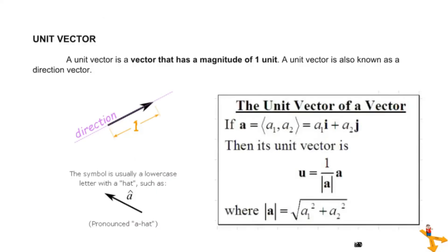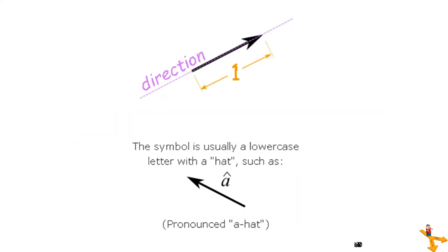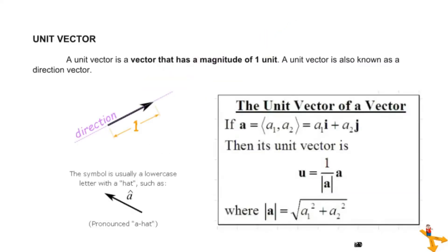Unit vector. A unit vector is a vector that has a magnitude of one unit. A unit vector is also known as a direction vector. The symbol for the unit vector is usually a lowercase letter with a hat, such as shown in the picture. The unit vector of a vector can be calculated using the given formula. Unit vector equals the ratio of one and the magnitude of the given vector. Where the magnitude of the vector can be calculated by getting the square root of the sum of the squares of the ordered pair.